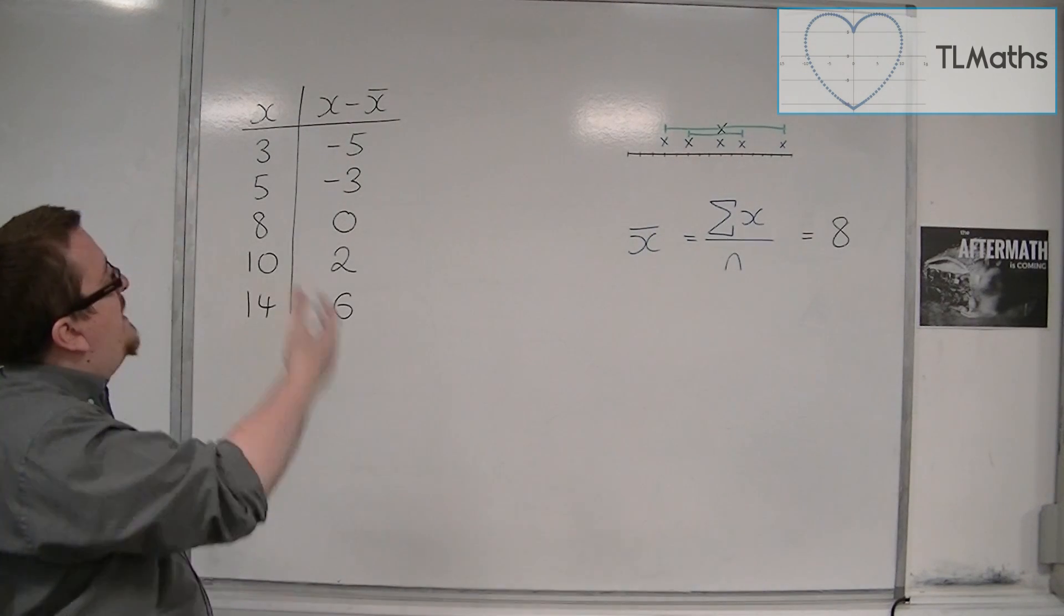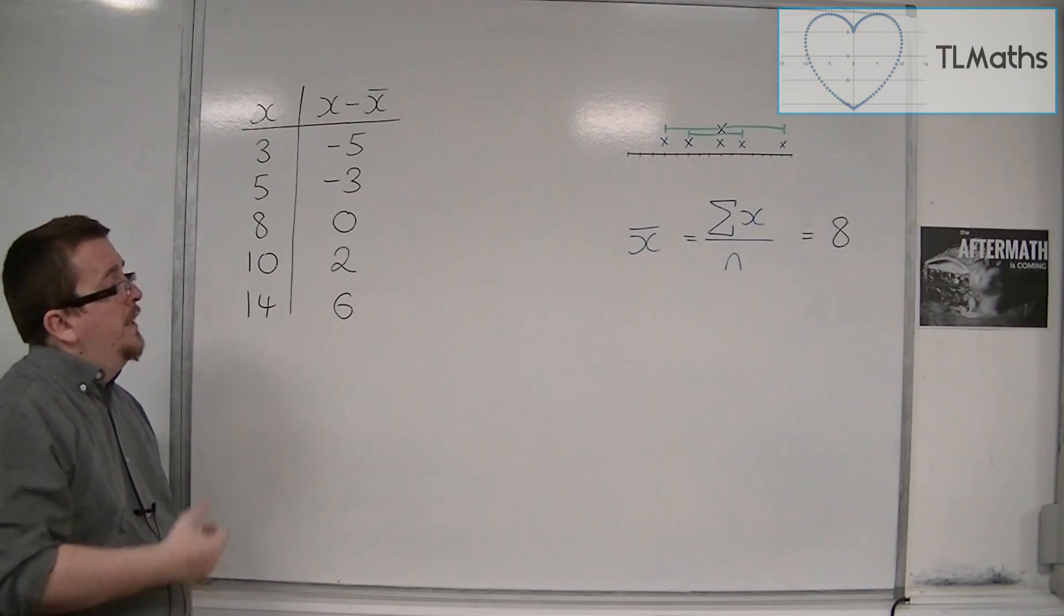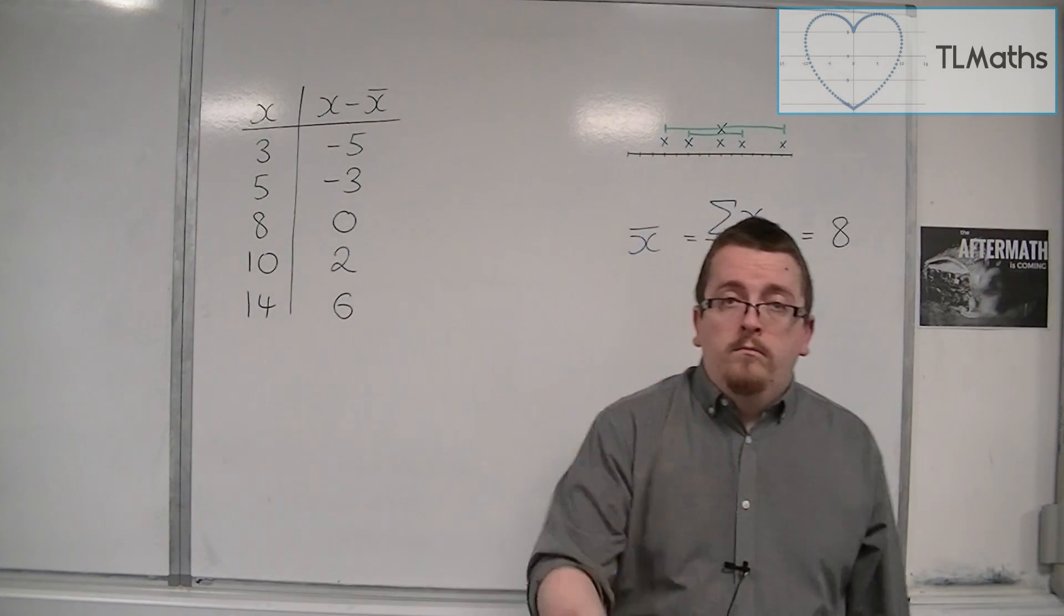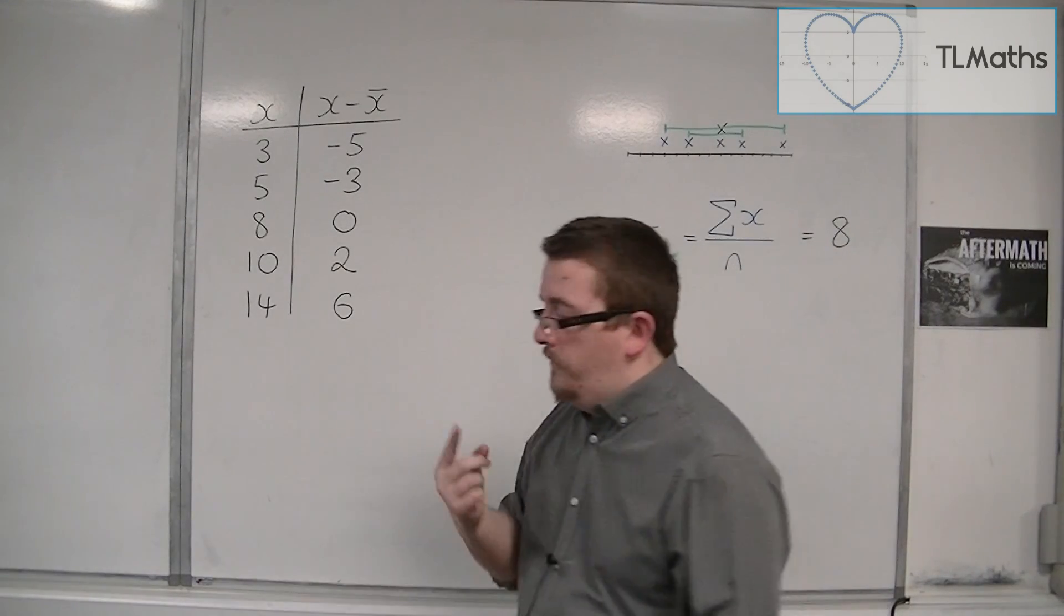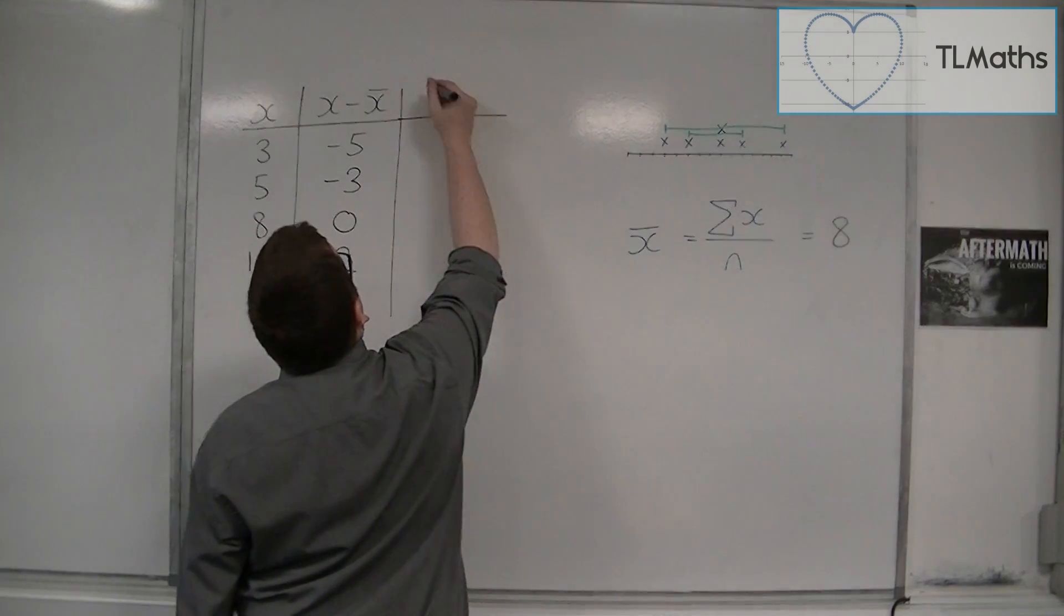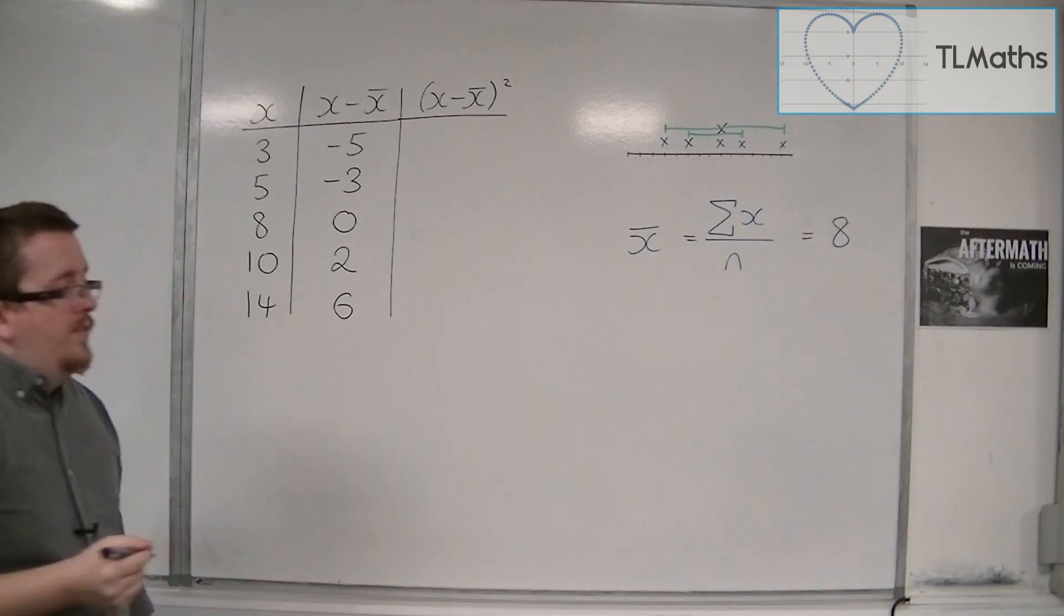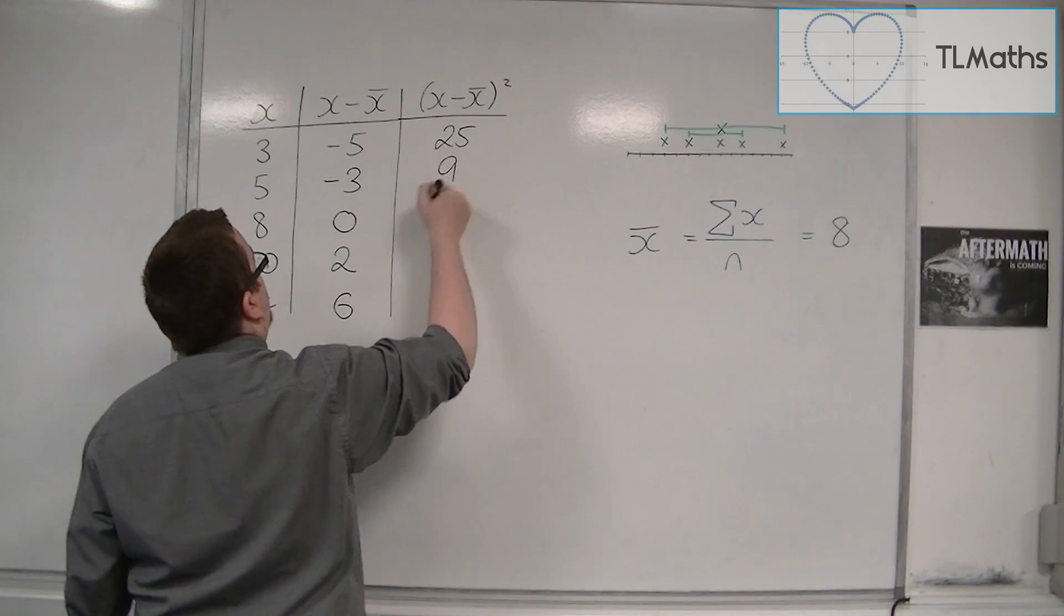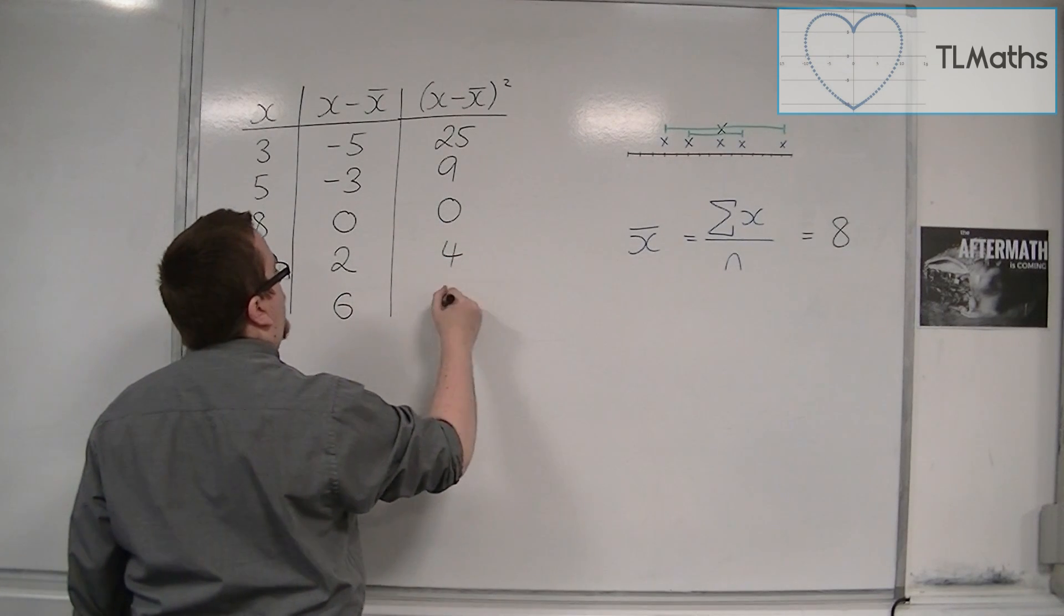So in some way, I need to make these positive, make them positive numbers. In order to do that, one process that will make positive numbers is squaring them. So if I square each of these values, so I'm going to find x minus x̄ squared, then that will make them all positive. Minus 5 squared is 25. Minus 3 squared is 9. 0 squared is 0. 2 squared is 4. And 6 squared is 36.